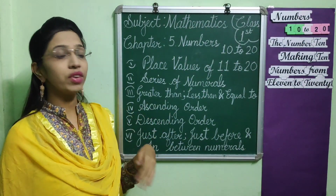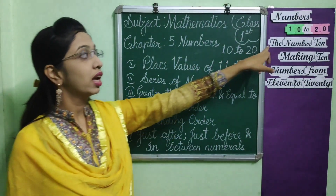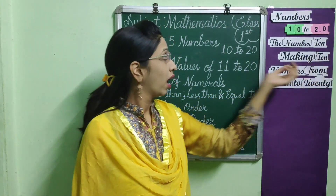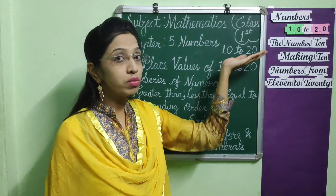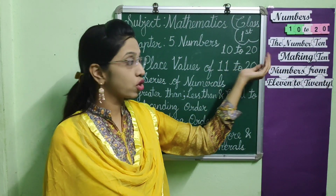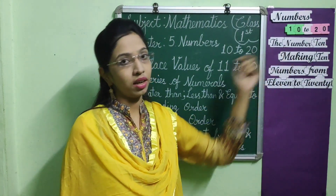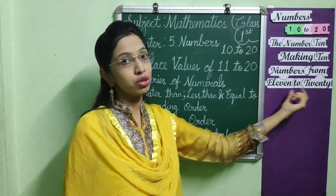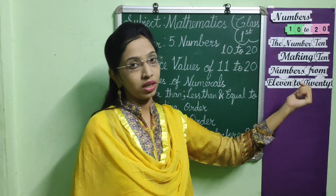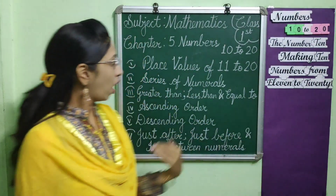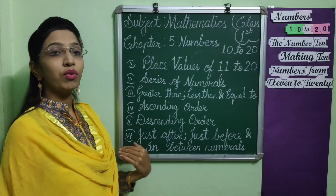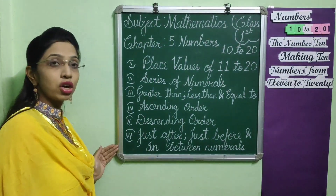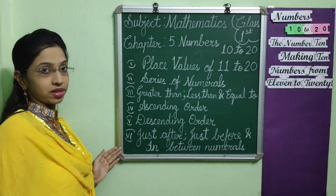In this chapter, we have learnt the number 10 and how to make pairs of 10, then the spellings of 11 to 20. Now, today we are going to learn these 6 topics.